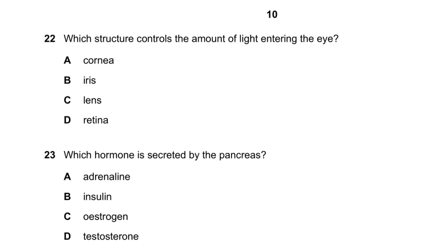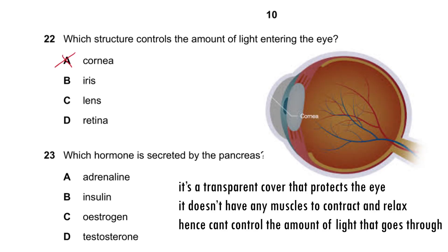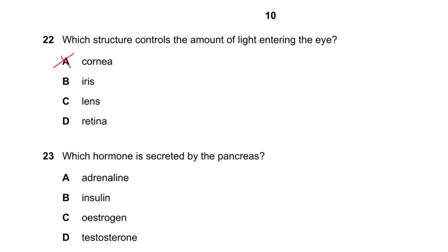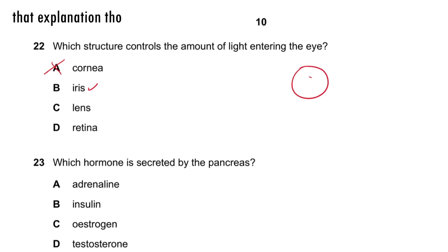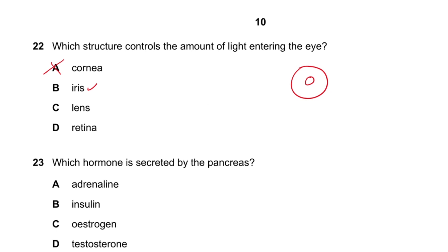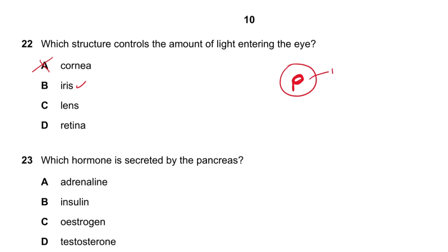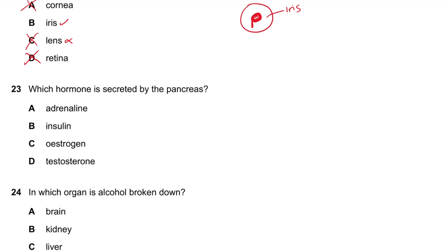Question 22: Which structure controls the amount of light entering the eye? Cornea — no, it can't. Iris — yes, the iris contracts and relaxes to control light entry. A helpful memory trick: the pupil looks like a pea — it's just a hole and can't do anything. The lens only diffracts light onto the retina. Retina — no.